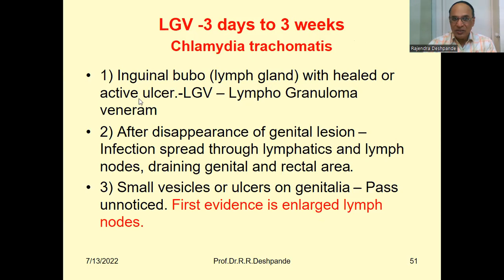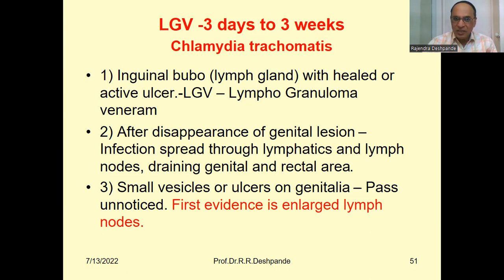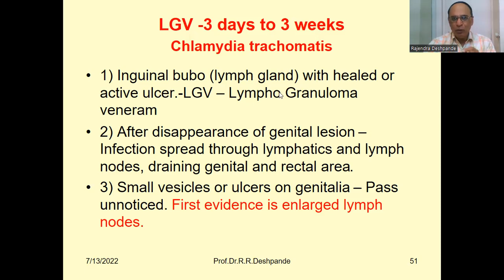The most important clinical feature is inguinal bubo. Bubo is the hallmark of LGV — don't forget this relation. Bubo is a lymph gland enlargement. This bubo will be accompanied by an ulcer on the genitalia — it may be a healed ulcer or an active ulcer — but the bubo is the characteristic feature of lymphogranuloma venereum.